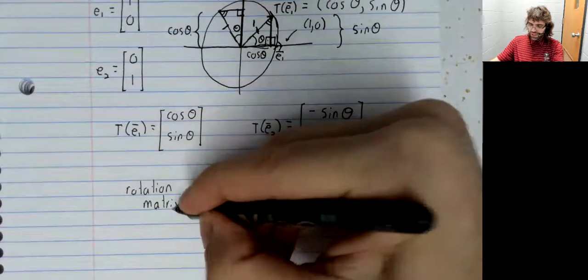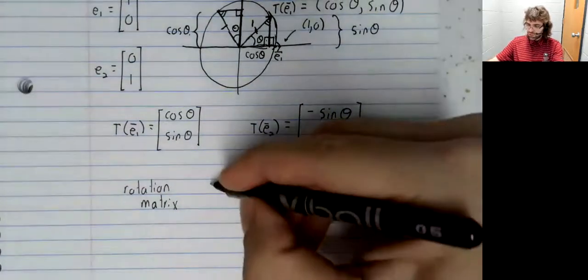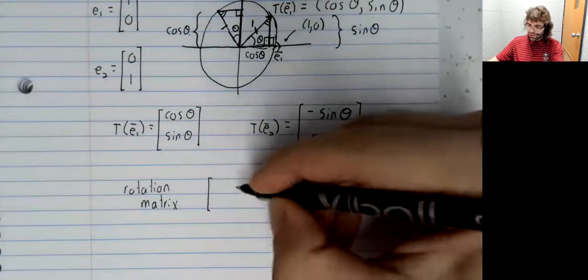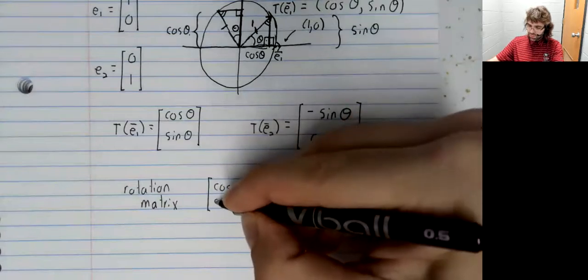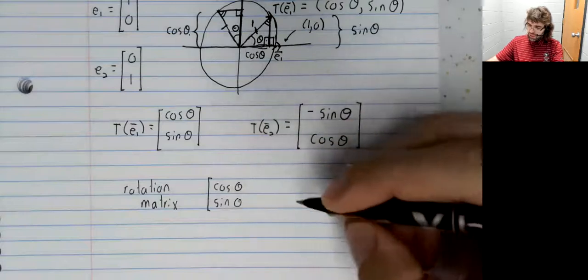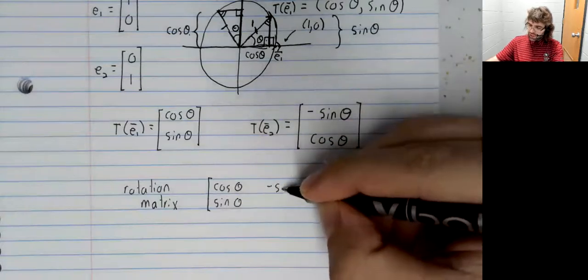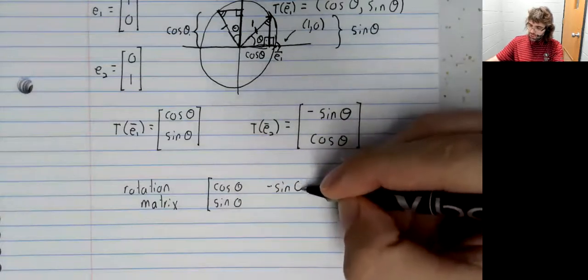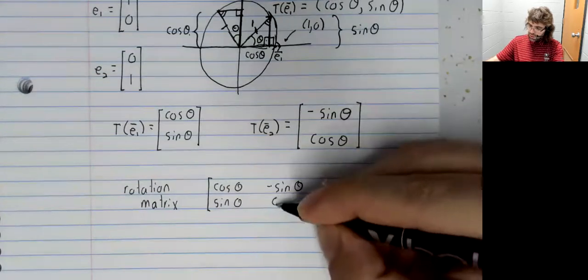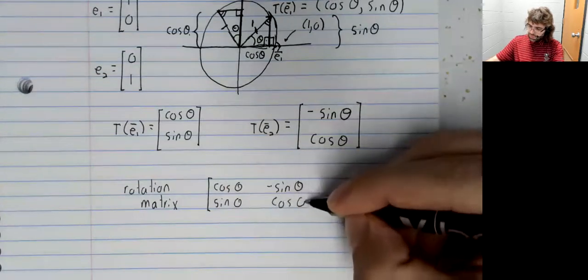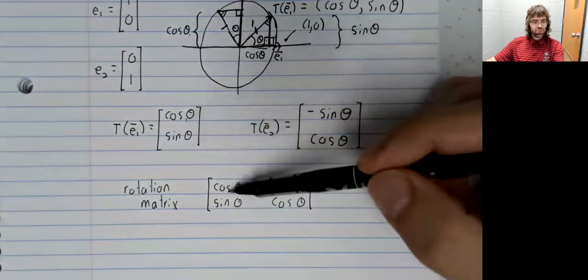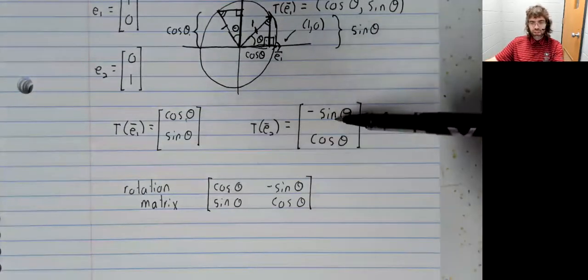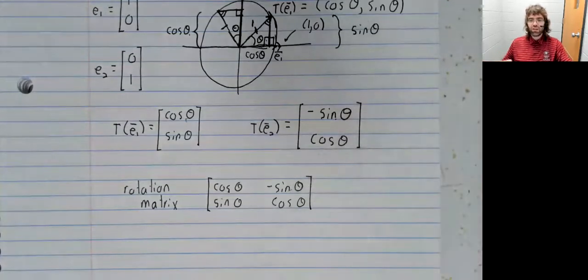And that gives us the rotation matrix, as this matrix is called, that has this as its first column and this as its second column.